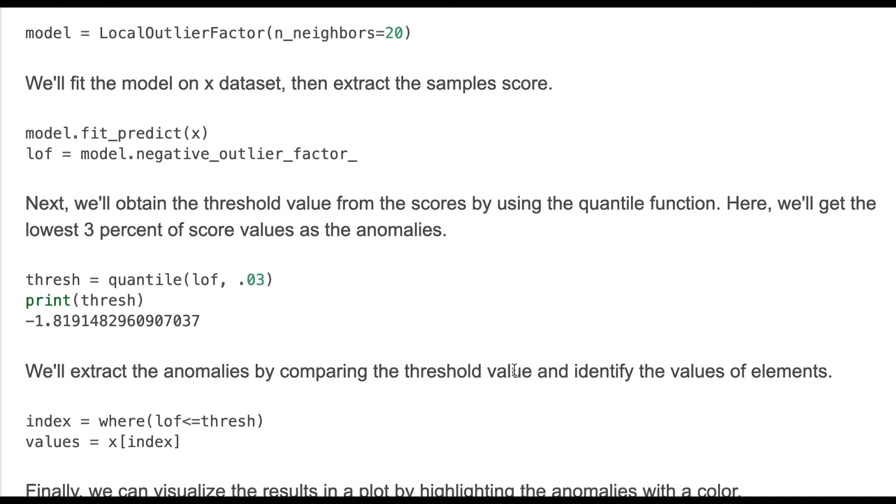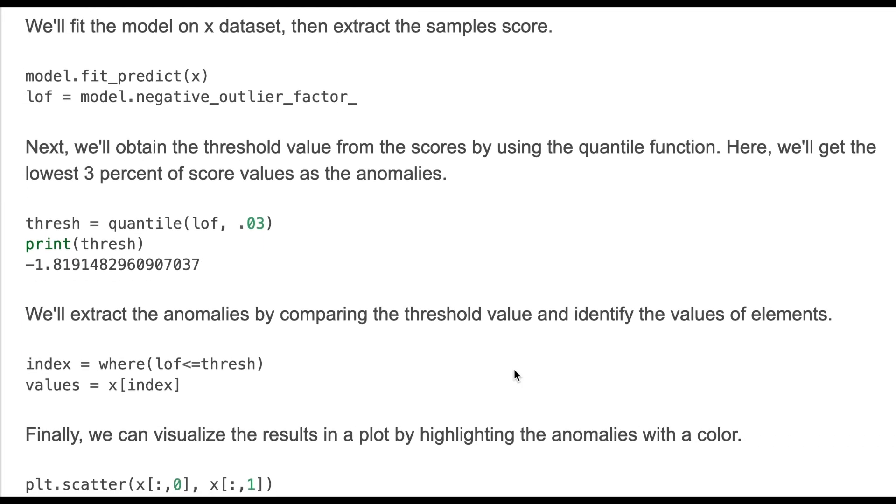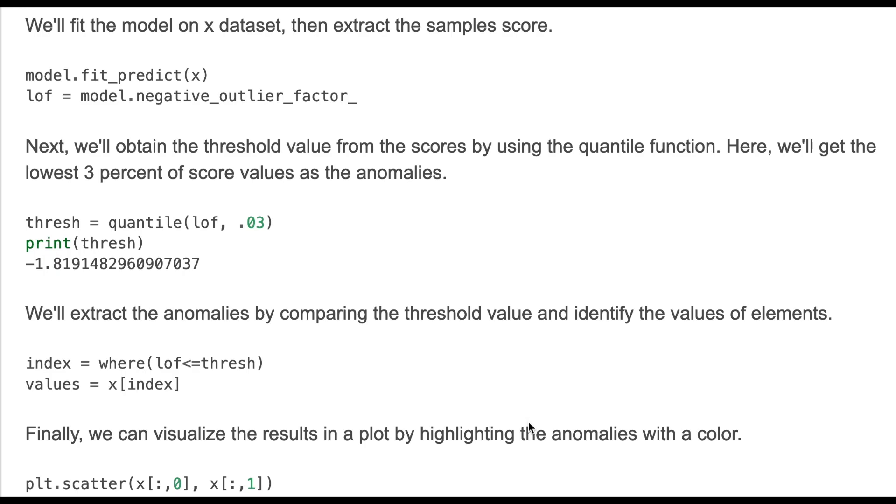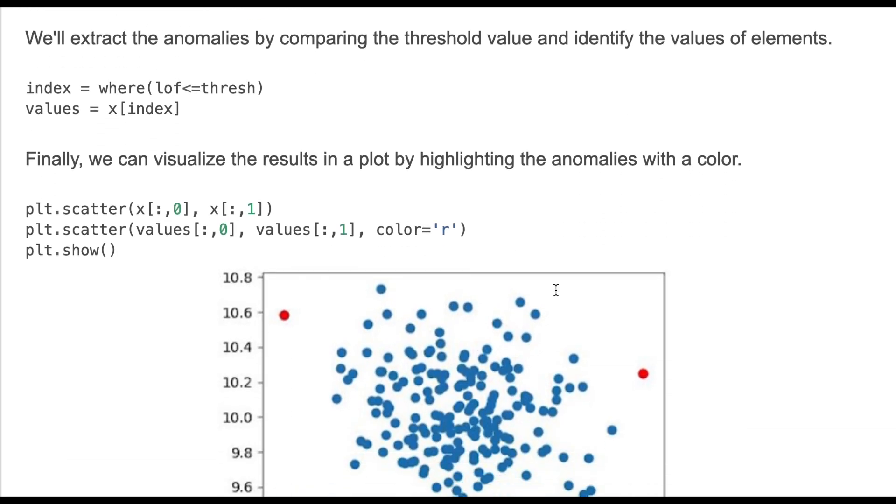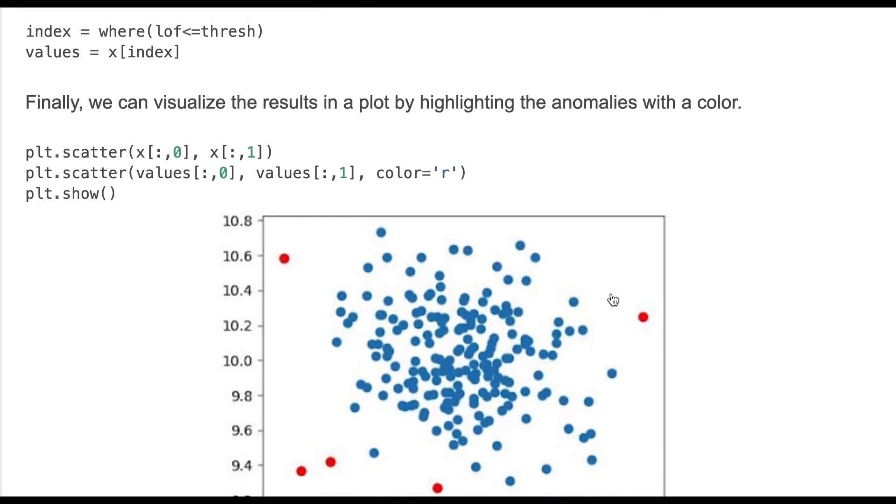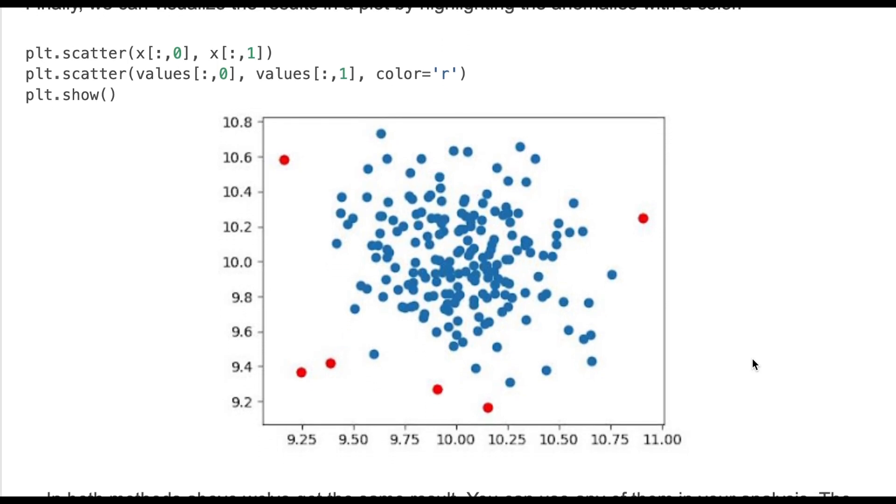Then we'll obtain the threshold value from the scores by using the quantile function. Here we'll get the lowest 3 percent of score values as the anomalies. This is the threshold value. Then we'll extract the anomalies by comparing the threshold value and identify the values of elements. Finally we'll visualize the results in a plot by highlighting the anomalies with a color.